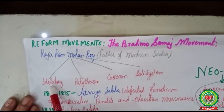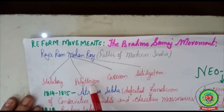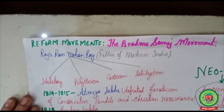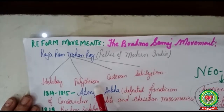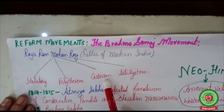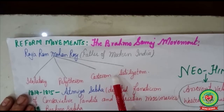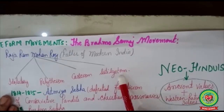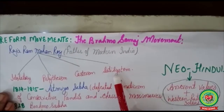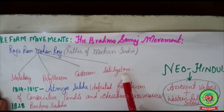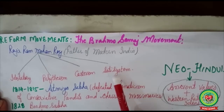He was against idolatry — idolatry means to worship the images of gods and goddesses. He did not believe in polytheism, meaning believing in more than one god; he believed there is only one God. He was against casteism and did not believe in upper or lower caste — he believed all people are equally created by God and should be treated equally. He was also against the Sati system.